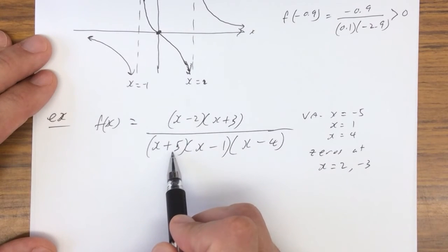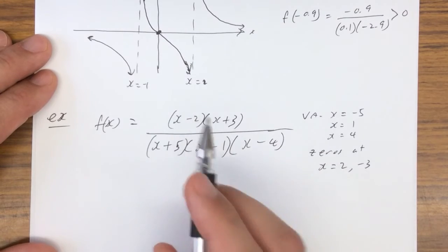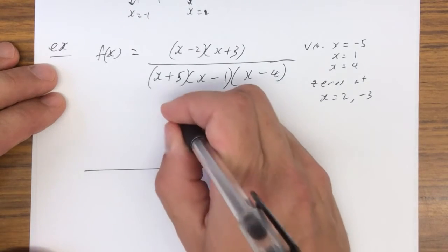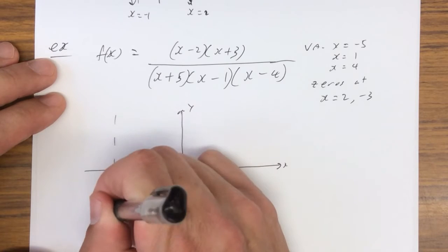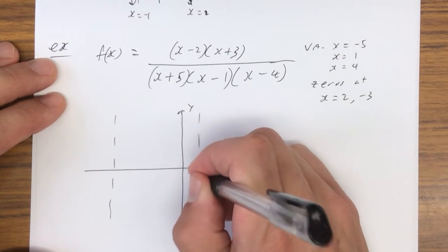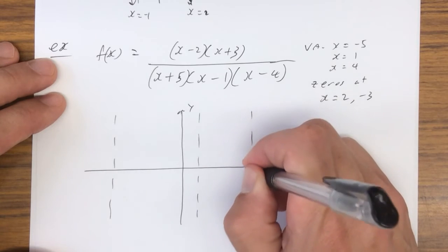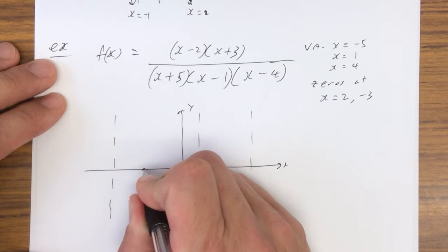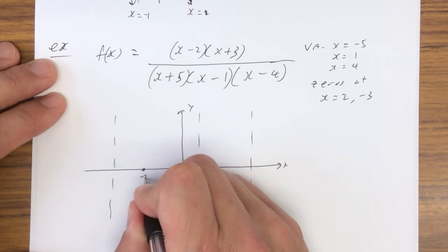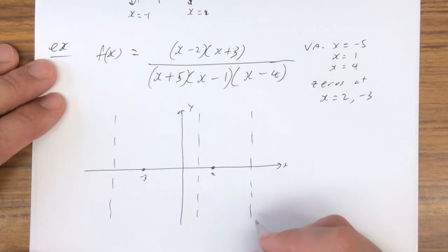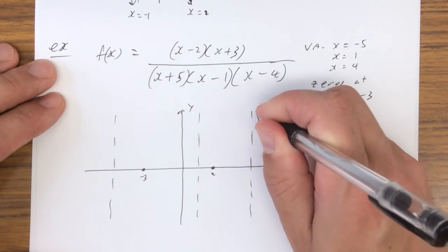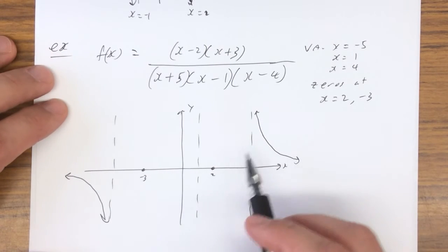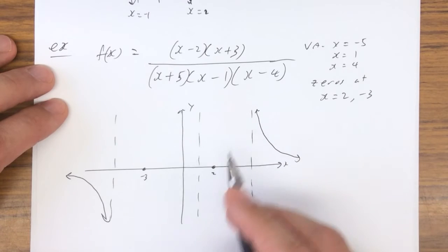This is going to be a quadratic over a cubic, so it's going to have the end behavior of 1 over x. Let's draw this — put in the vertical asymptotes at negative 5, 1, and 4, and the zeros at 2 and negative 3. It's 1 over x, so it's going to look like this on the ends.